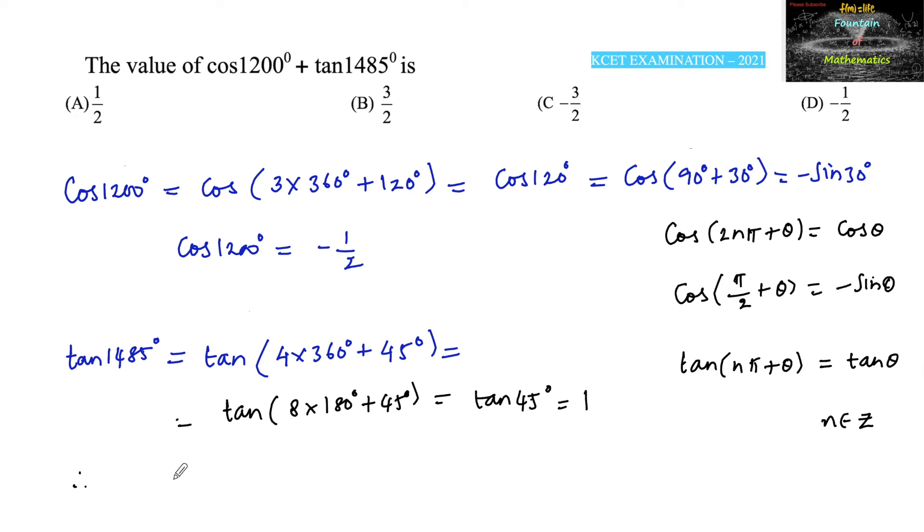Therefore, we can give the answer: cos 1200 degrees plus tan 1485 degrees, which is equal to minus 1 by 2 plus 1, that is 1 minus half is plus 1 by 2. So we can go with an option here.